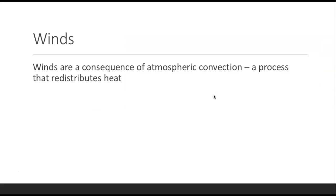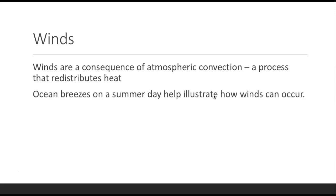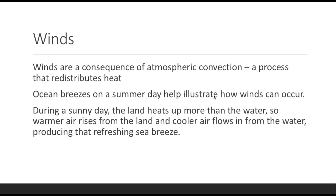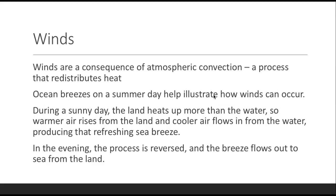Winds are a consequence of atmospheric convection — the same process we discussed where rocks heat and rise and then cool and sink. Atmospheric convection redistributes heat by moving air. Ocean breezes on a summer day illustrate how winds occur: on the beach during a sunny day, the land heats up more than the water, so warmer air rises from the land and cooler air flows in from the water, giving you that refreshing breeze from the sea. At night, water holds heat better than the land, so the process reverses — heat from the water rises and the breeze flows out to the sea.